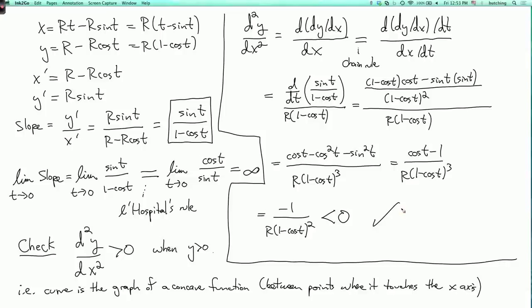So, that's an example of how you can start with a description of a curve, write down parametric equations for the curve, and then use those equations to calculate interesting features of the curve, like its slope and concavity.